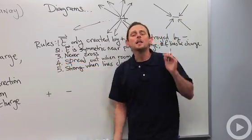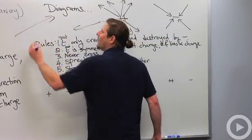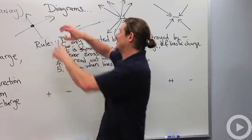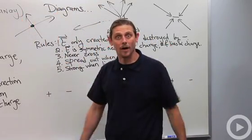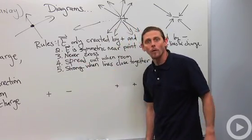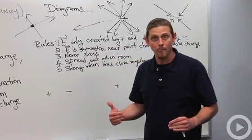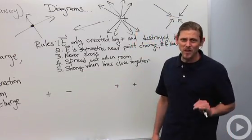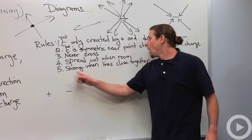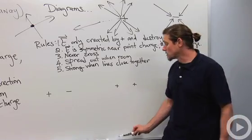Rule three: electric field lines can never cross. If they crossed, a charge placed at that point would have two different force directions, which is physically impossible. Rule four: electric field lines spread out whenever there's room to spread out. Rule five, more of a guideline: the electric field is strong where the lines are close together and weak where the lines are far apart. That's how we interpret electric field line diagrams.